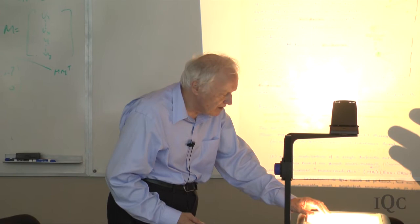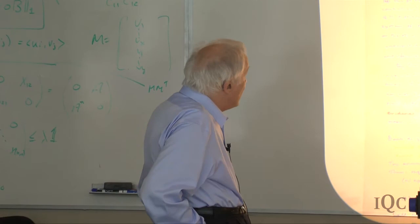The worst objection to the orthodox argument is Step 3. In effect, the hundreds of papers on decoherence implicitly argue: since all predictions for experimentally measurable quantities are the same as if the system were in a definite state i with probability |cᵢ|², therefore the system indeed is in a definite state i with probability |cᵢ|². This is a gross logical lacuna—it essentially confuses the meaning of the quantum formalism with the evidence that a particular meaning is or is not correct.